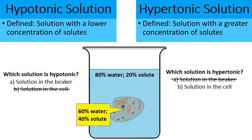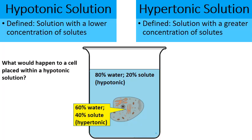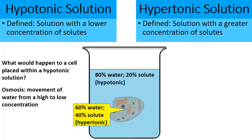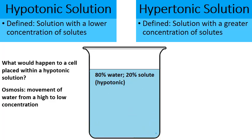With the outside of the cell labeled hypotonic and the inside labeled hypertonic, what would happen to a cell placed in a hypotonic solution? Osmosis is the diffusion of water from high to low concentration. Since 80% is a higher water percentage than 60%, water would diffuse into the cell. Over time, the cell would begin to swell and get larger and larger, to the point where it could even burst.